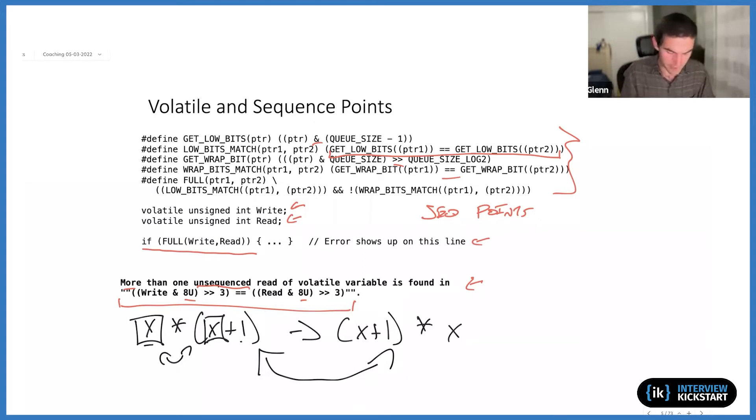Let me kind of relate that back to the proof here. The original error was more than one unsequenced read of volatile variables is found. And here we have an unsequenced operation. There is no required sequence that this is going to occur. It's unsequenced in that sense. So it's an unsequenced operation. But volatile requires things to be sequenced. Volatile requires one thing to happen before the other.